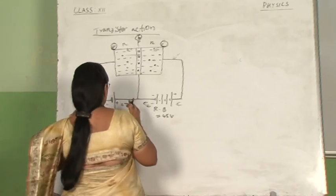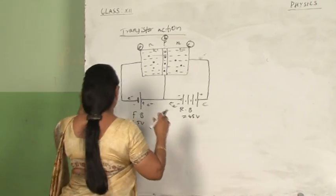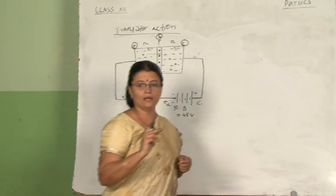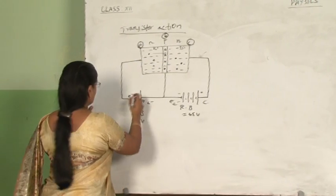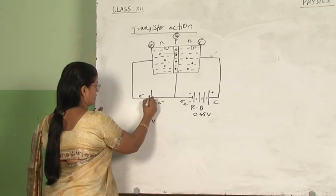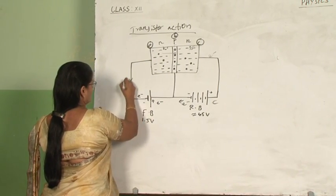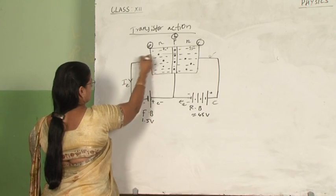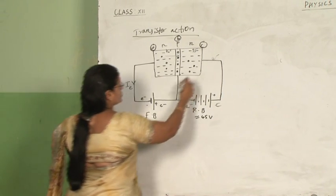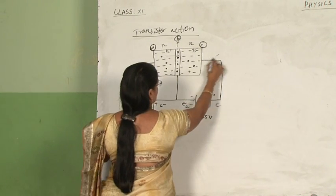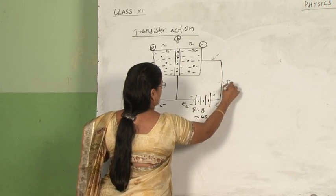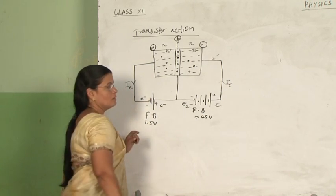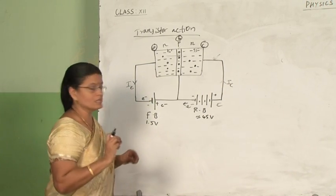Inside also, only electrons are moving. The direction of current is opposite to the movement of electrons. So when electrons are moving in one direction, the emitter current IE will flow in the opposite direction. Here also, electrons are coming in one direction so IC will be opposite to that.